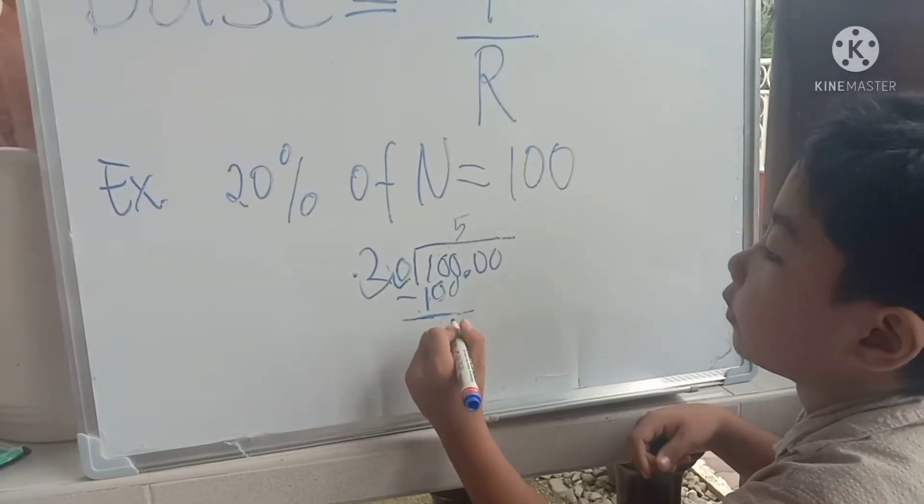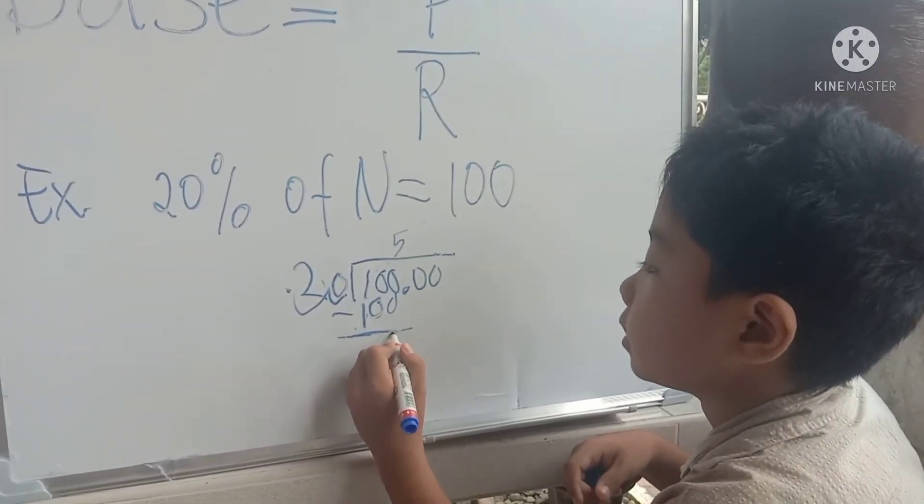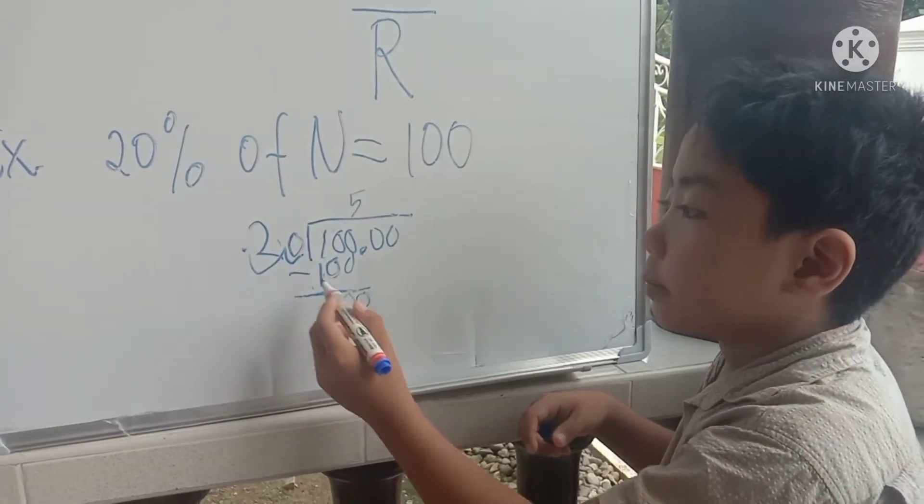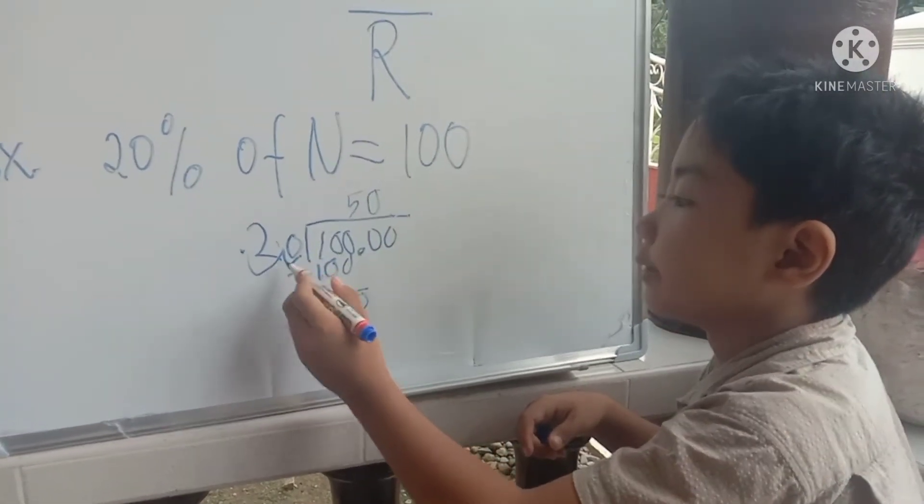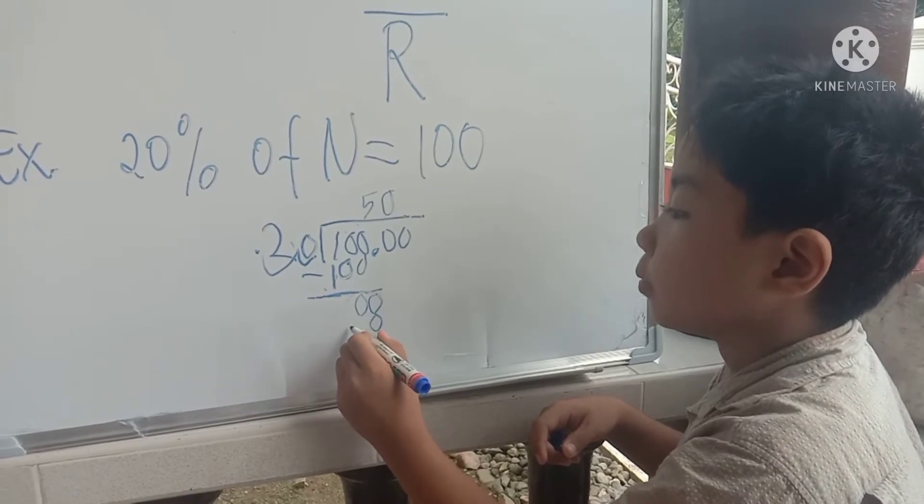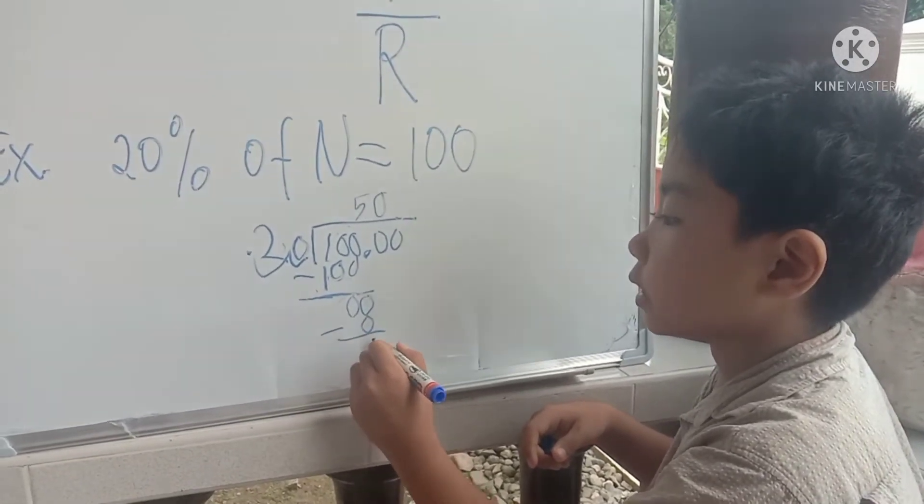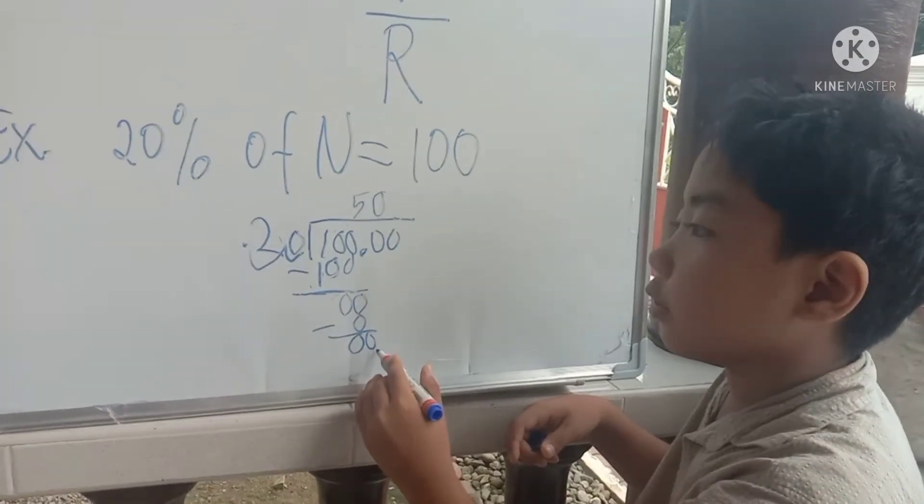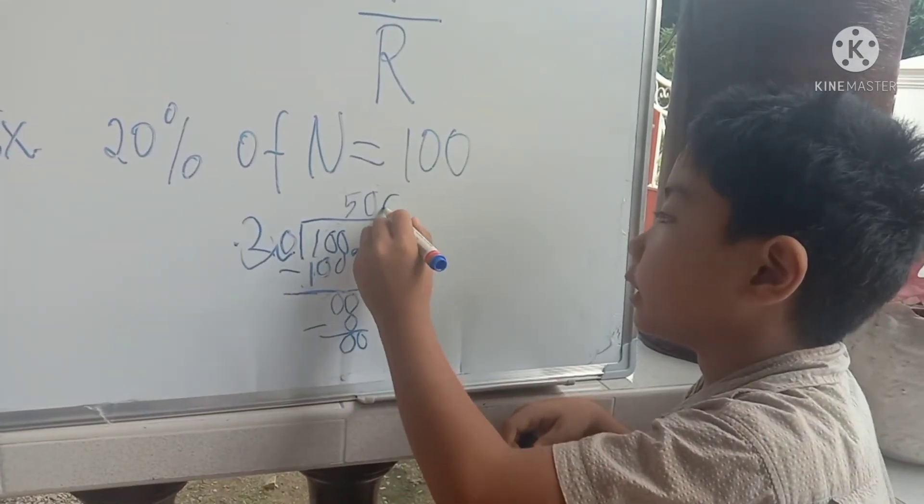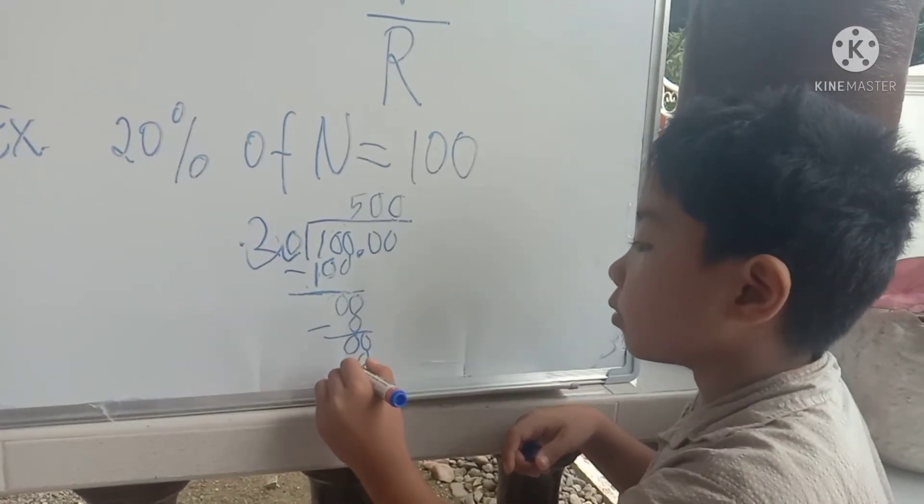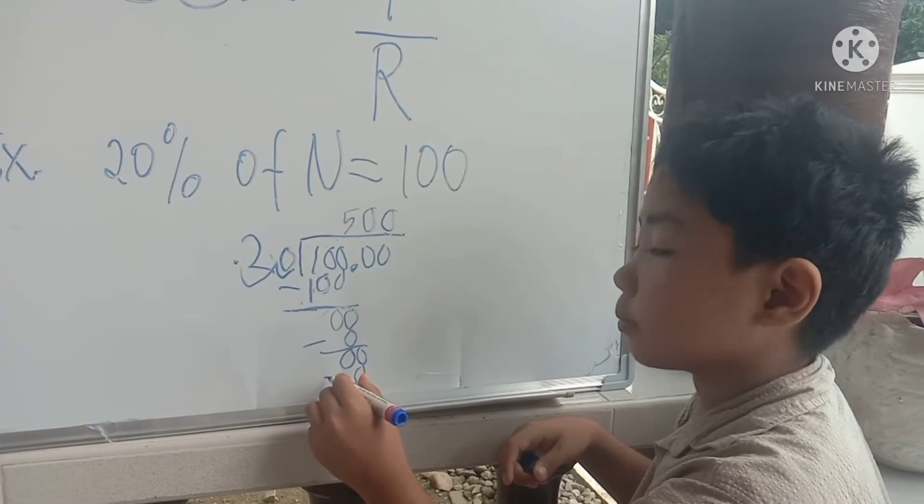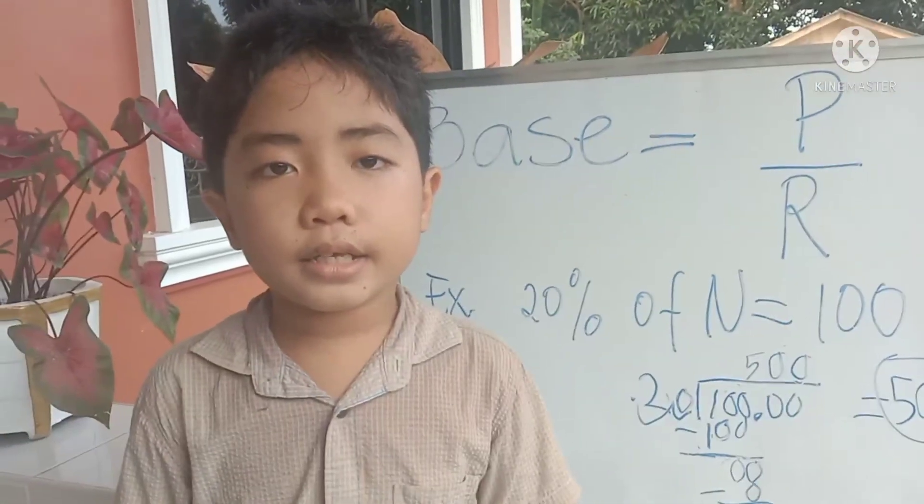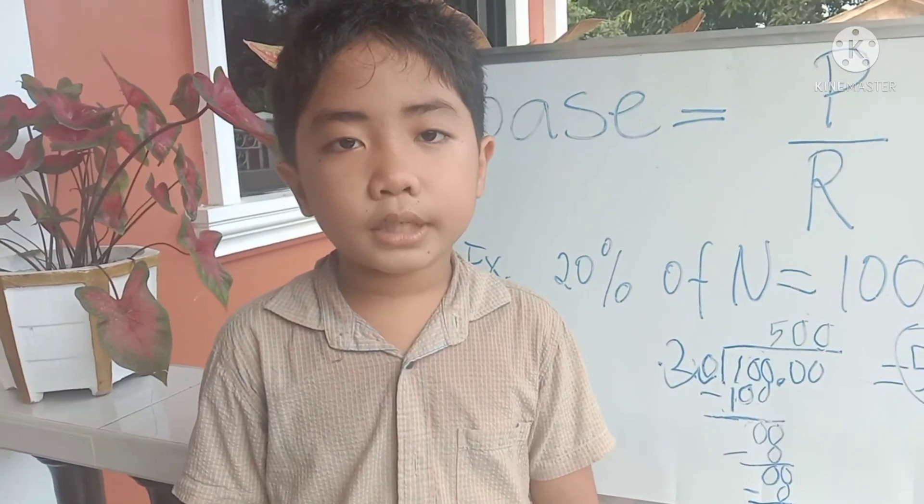100 minus 100 equals 0. 0 divided by 20 equals 0. 0 minus 0 equals 0. Bring down 0. So, 500 is the base. Bye-bye, guys. This is Daniel Sikaplianis. Please subscribe to my YouTube channel.